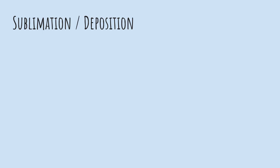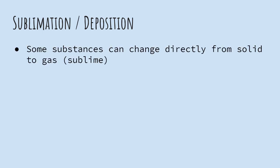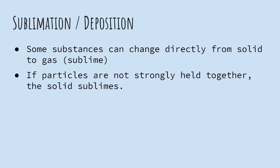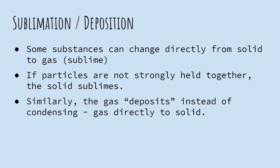So there's one other phase change that most people don't realize is actually a thing. It's called sublimation, or the opposite would be called deposition. And this is when a substance can change directly from a solid right to a gas. It doesn't melt. It doesn't go to a liquid. It's called subliming. So if the particles of the solid aren't really strongly held together, the solid will sublime. It'll go directly to gas form. Also, instead of condensing, the gas just turns back into a solid. We say it deposits.